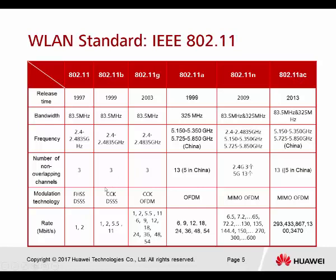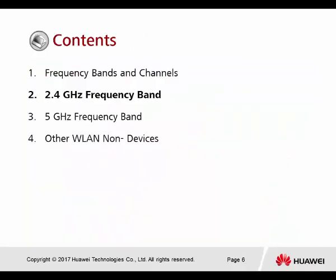Regarding modulation technology: 802.11 uses FHSS and DSSS. 802.11B uses CCK and DSSS. 802.11G can support OFDM — this is why B and G can support rates up to 54 Mbps. 802.11N supports OFDM and also MIMO technology, which allows 11N to easily reach up to 300 Mbps. 802.11AC is the last one shown here, with the table showing all the different data rates supported by each version.